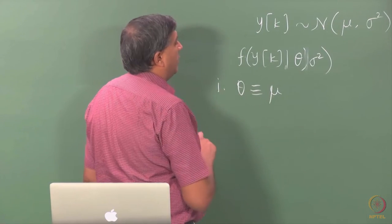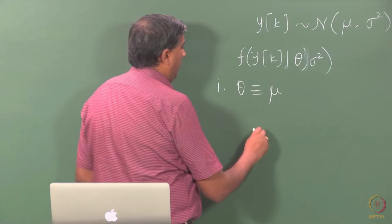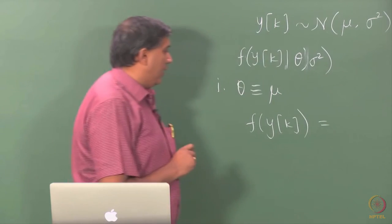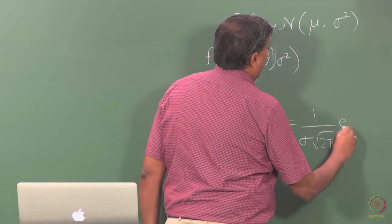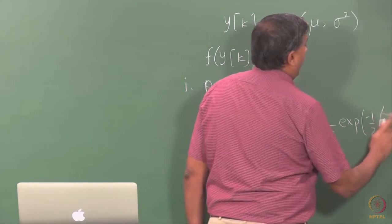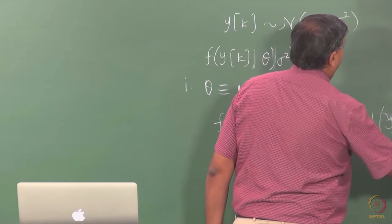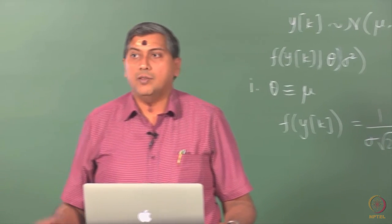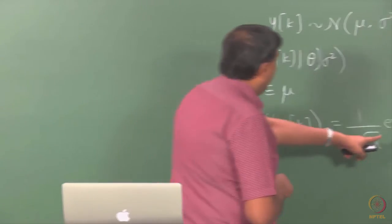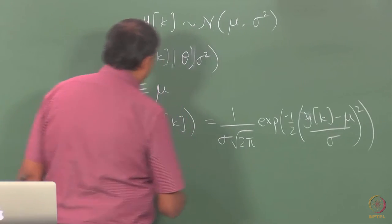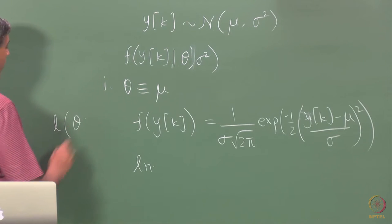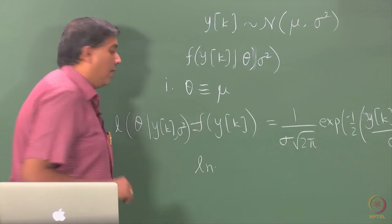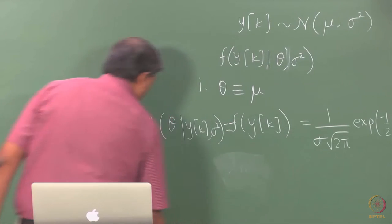Since theta is the mean, and y_k follows a Gaussian distribution, we know from probability theory that f(y_k) = (1/σ√(2π)) · exp(−(1/2)·((y_k − μ)/σ)²). This is the pdf, which is nothing but the likelihood itself. Since we work with the log-likelihood, we take the logarithm: the exponential vanishes, and since sigma squared is given and constant, the log-likelihood is L(θ) = c − (1/2)·((y − μ)/σ)².